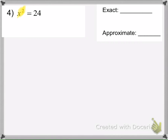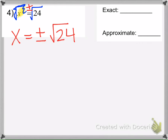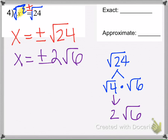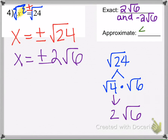Example 4: the squared term is already isolated, so square root both sides with plus or minus to get x equals plus or minus radical 24. Simplify: the square root of 4 is 2, and 6 can't be simplified, so x equals plus or minus 2 radical 6. In the calculator, enter 2 times radical 6 to get 4.90, and negative 2 radical 6 gives negative 4.90.